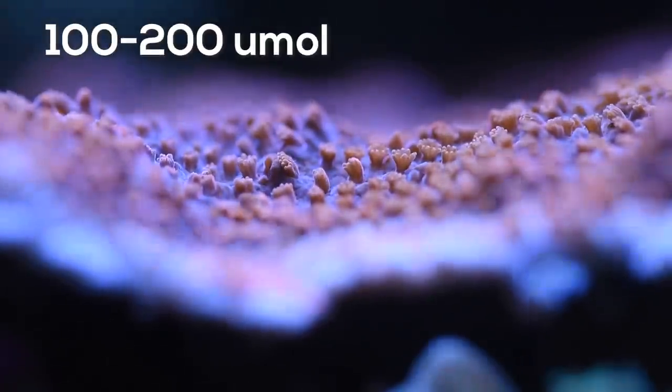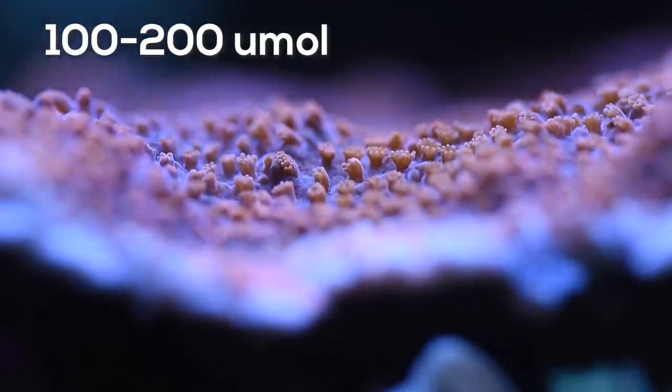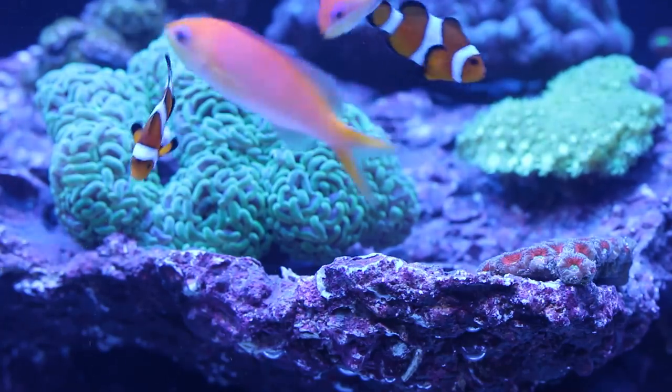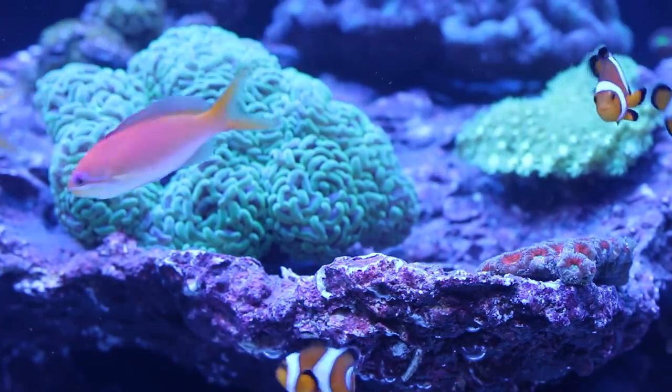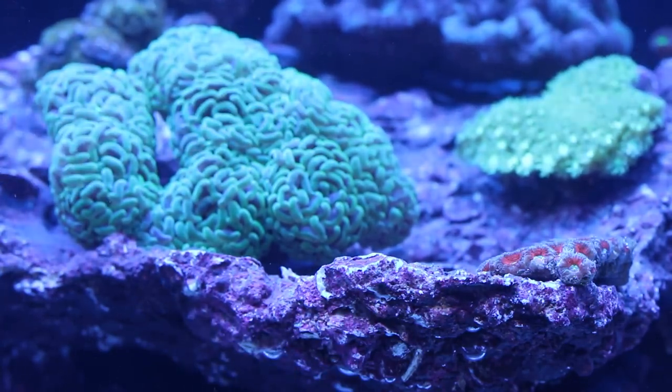Research shows that the ideal PAR level for corals is 100 to 200. This level has been proven to maximize the photosynthesis rate of zooxanthella, which will also maximize coral growth.